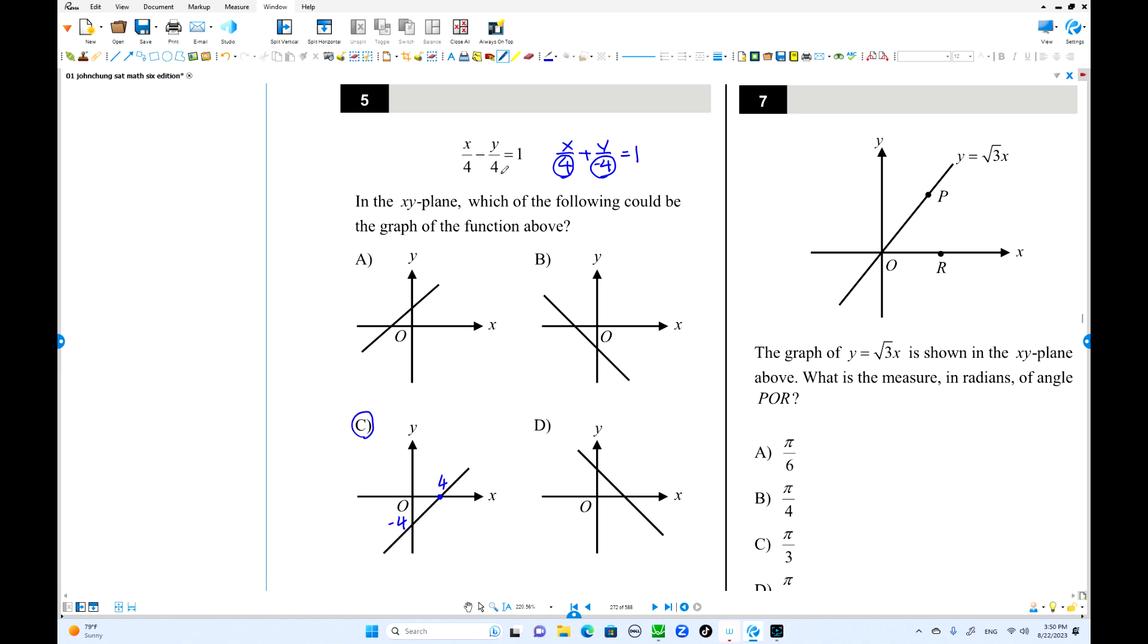Or you can switch. You can express y in terms of x. Times 4. x minus y equals 4. And y equals x minus 4. You can do this one too. Slope is 1. y intercept is negative 4. Choice C is the answer anyway.